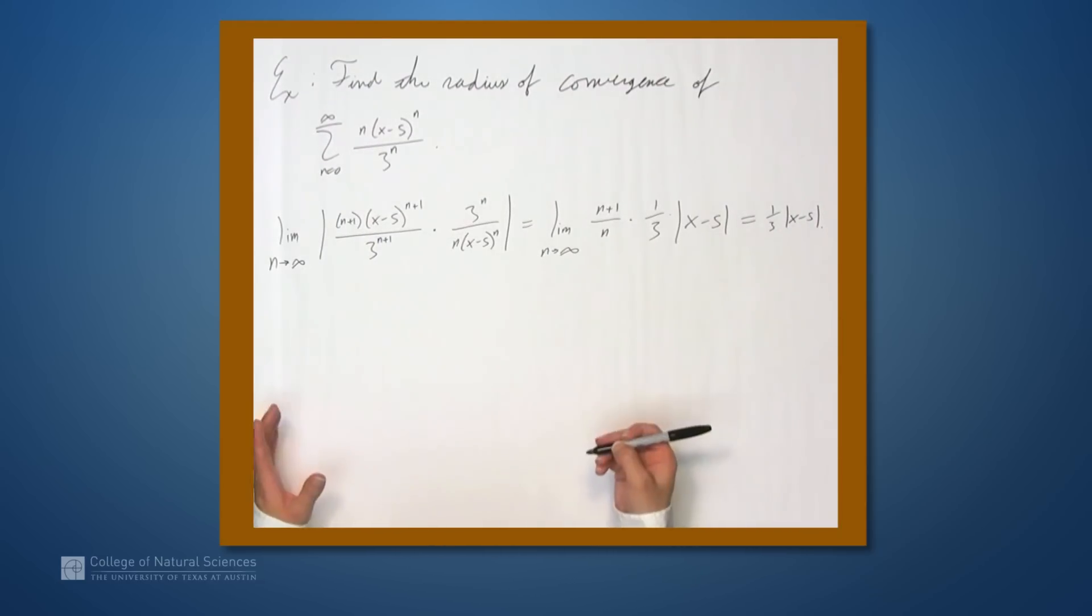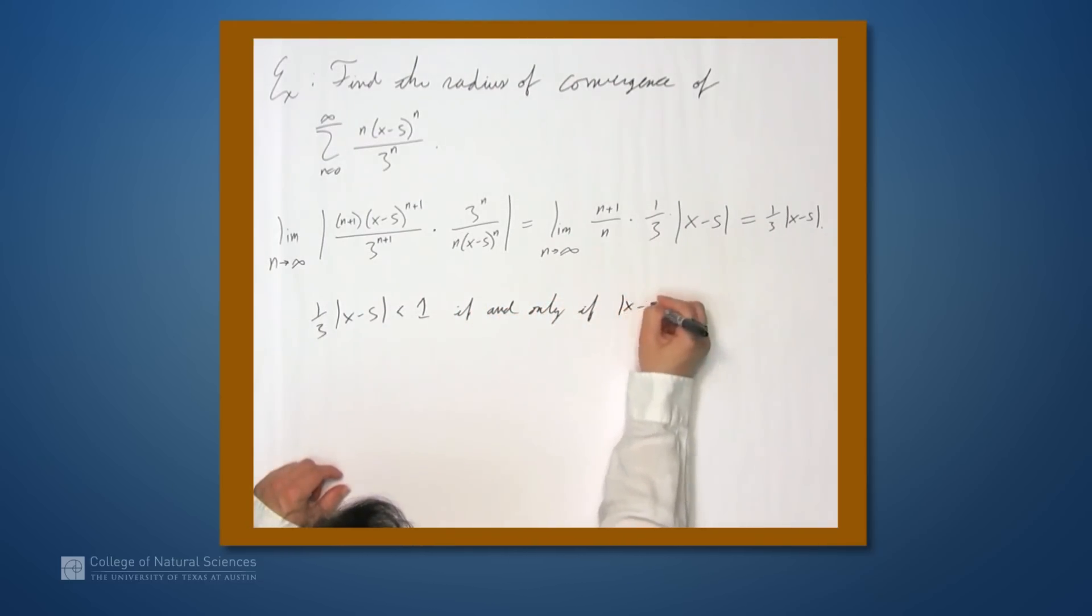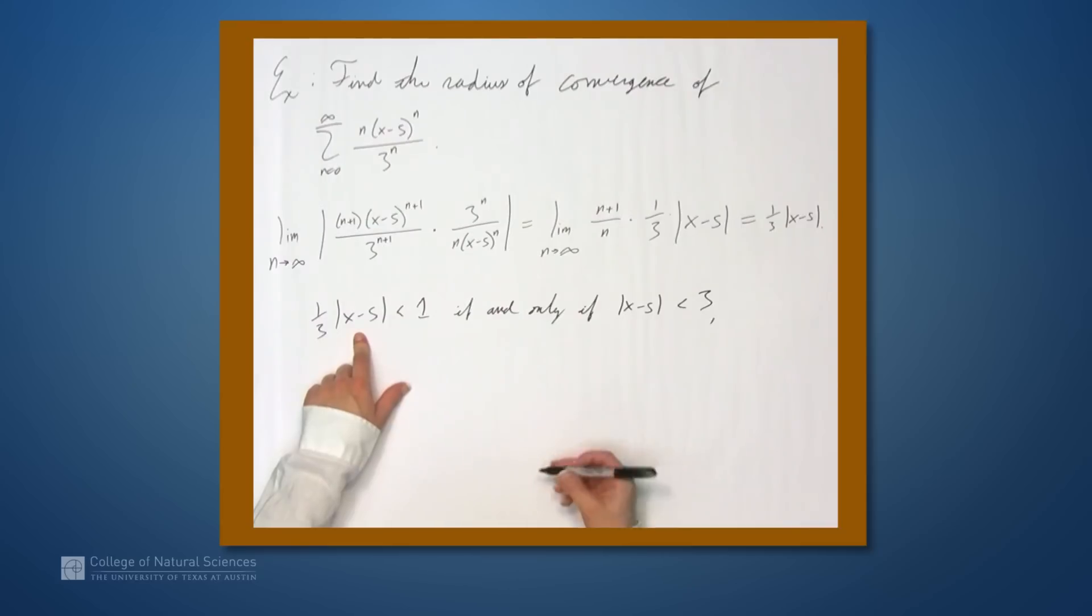Now by the ratio test, we want this to be less than 1 to guarantee convergence. So (1/3)|x-5| < 1 if and only if |x-5| < 3. This means that 3 is our radius of convergence. Therefore, the radius of convergence of this series is 3.